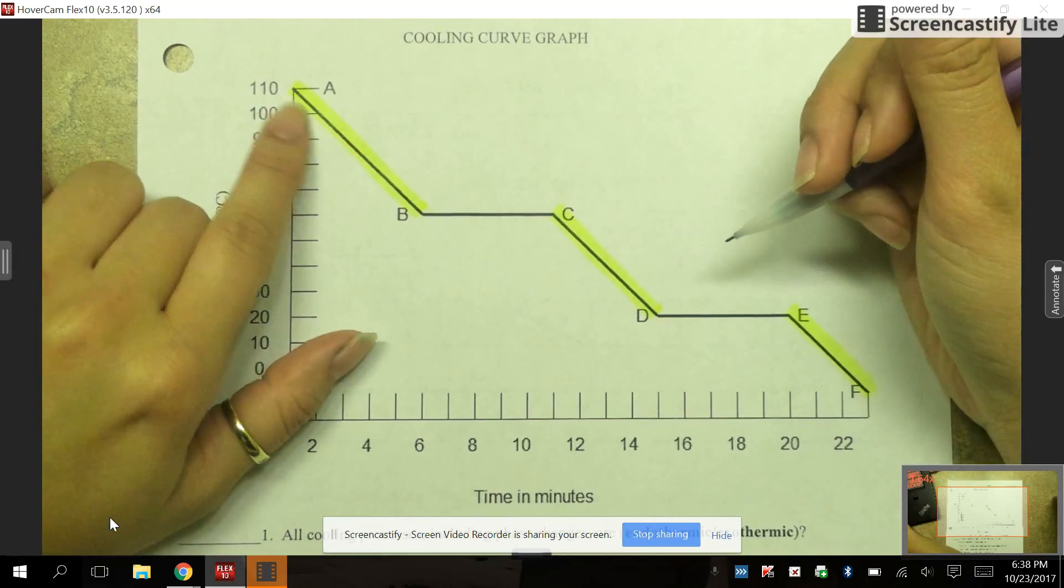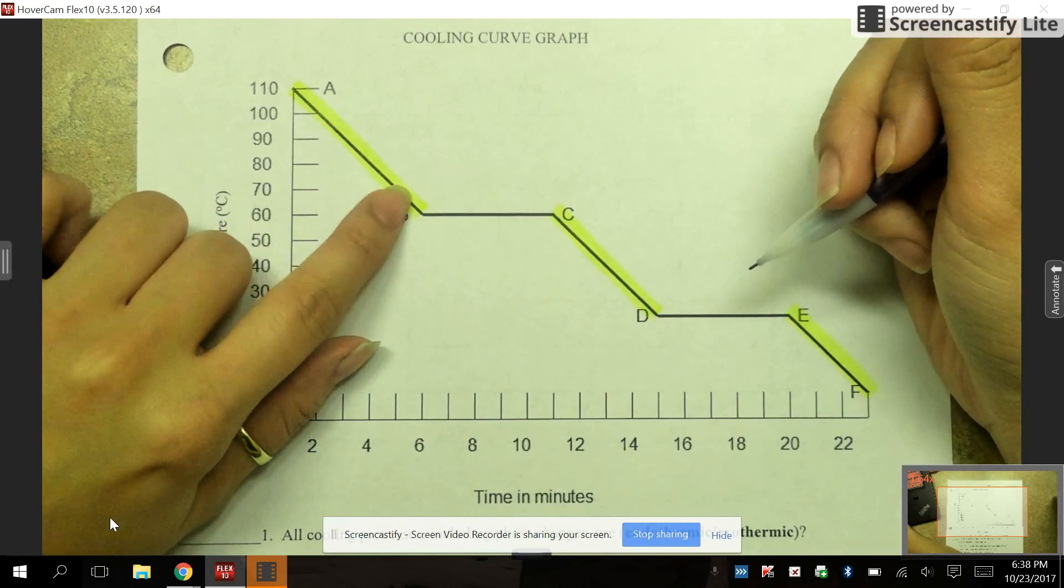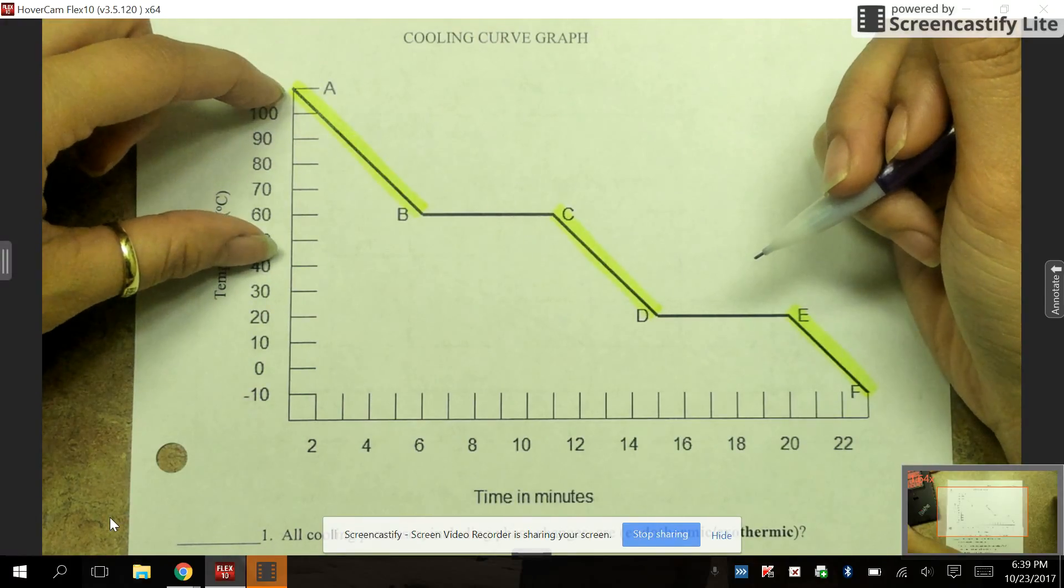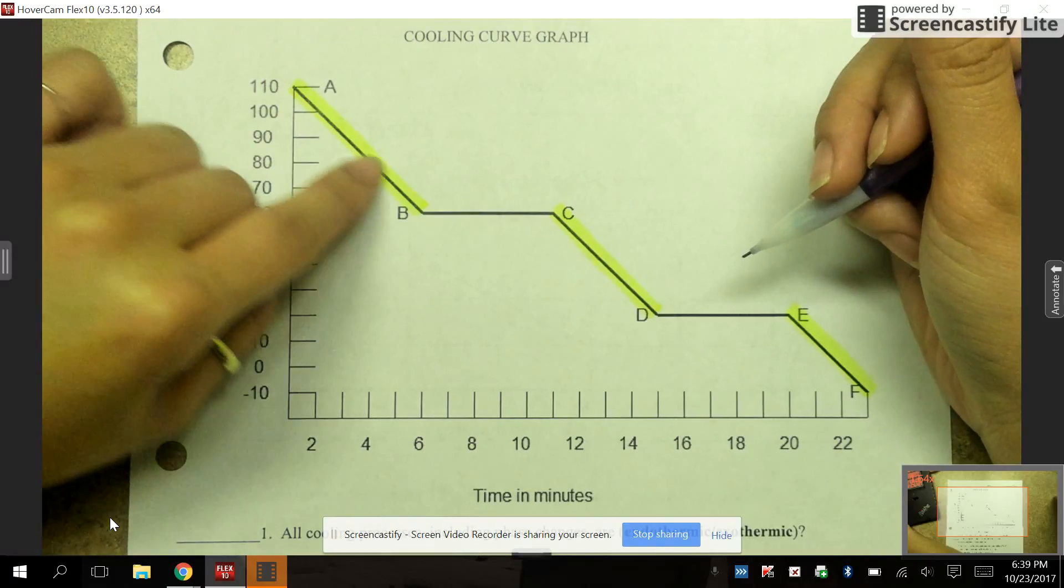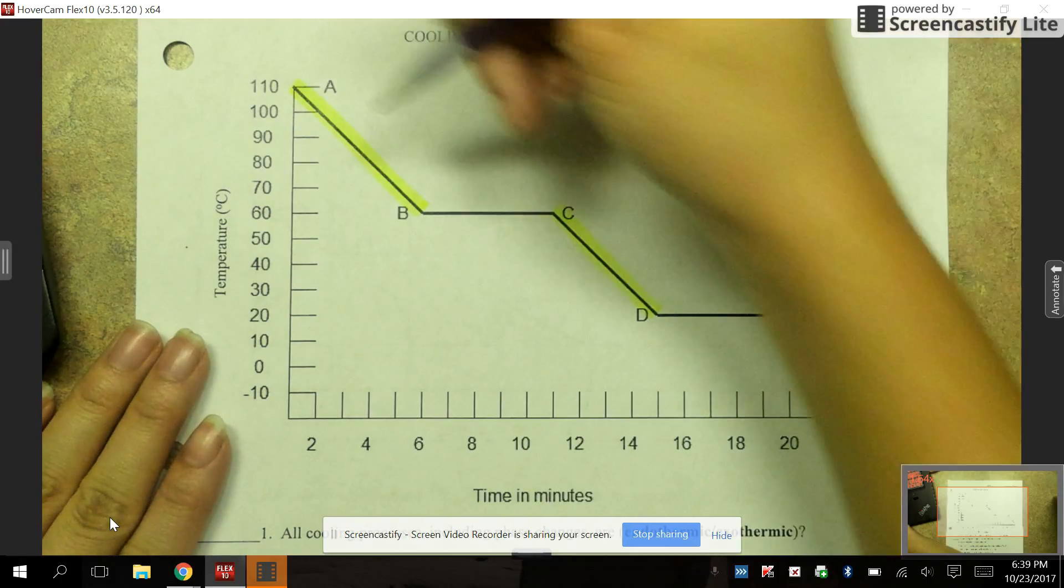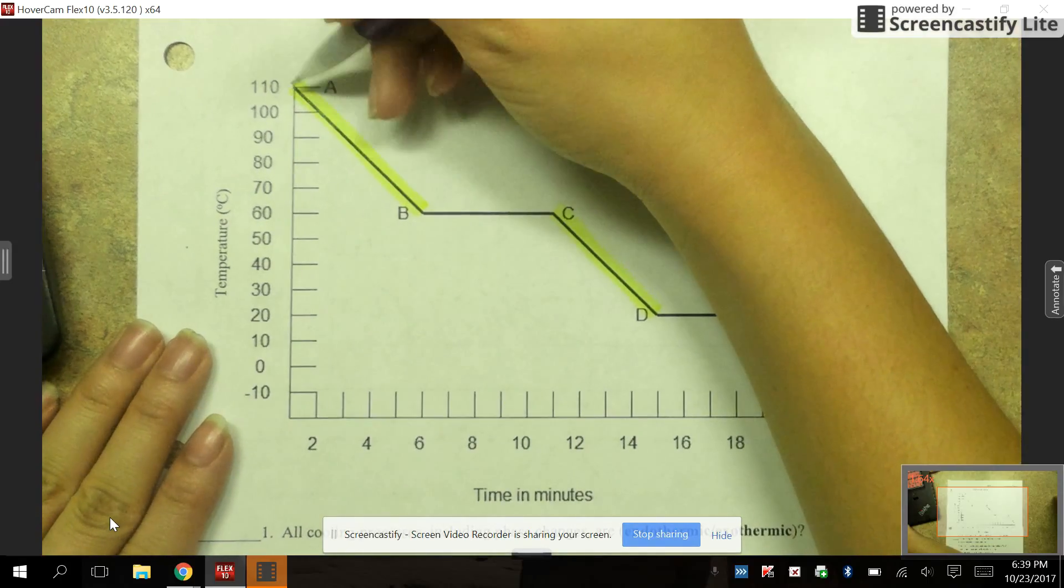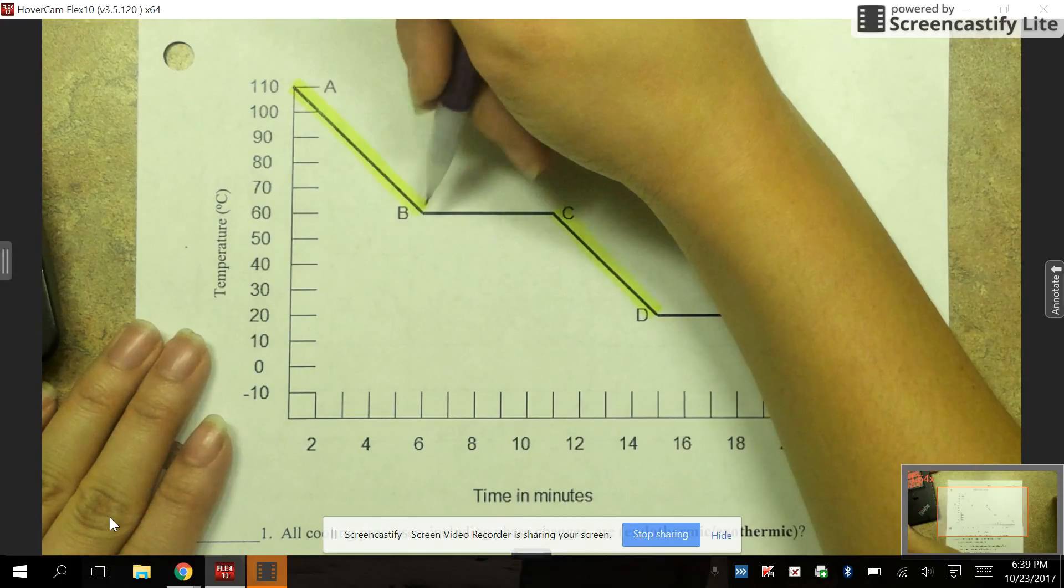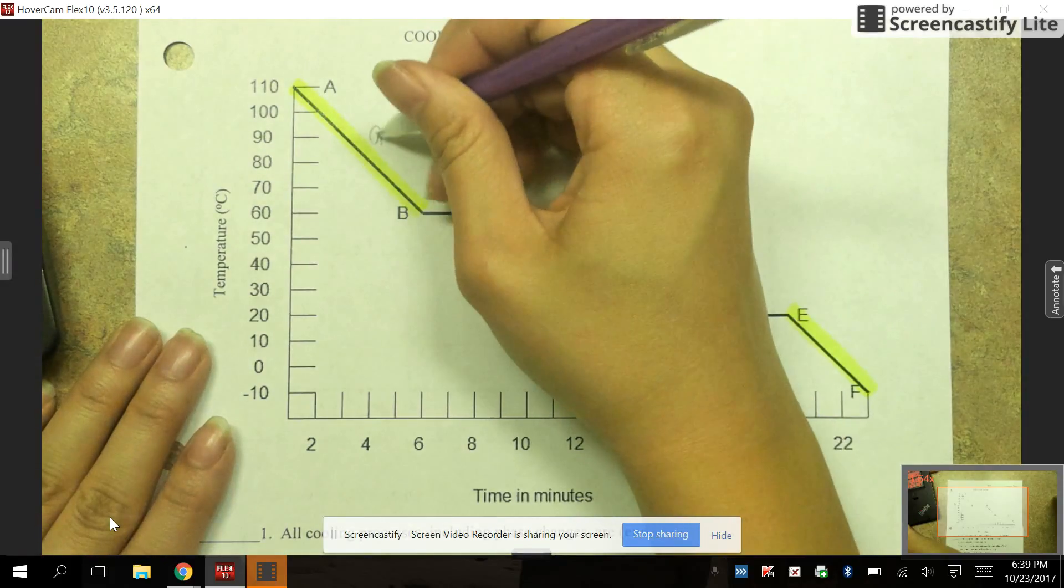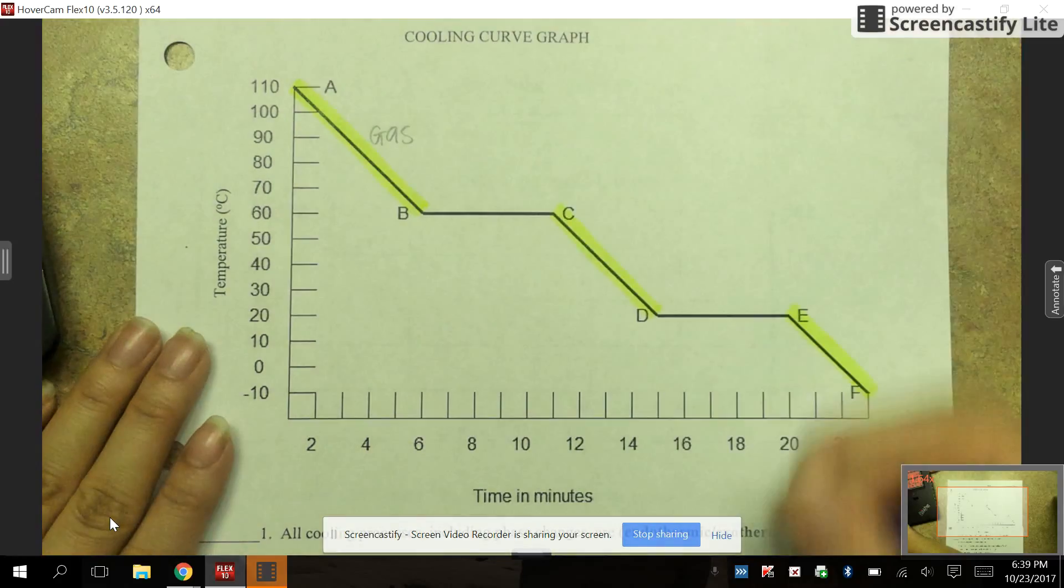If you look at this first slanted line right here we have to determine whether this is a solid, liquid, or gas. You're starting off at a very high temperature and you'll notice that as time progresses the temperature begins to drop. You have to remember that temperature is a measure of kinetic energy. So basically if this is a high temperature you should know that whatever state of matter this is has to be the state of matter that has the highest kinetic energy. And that is your gases. So go ahead and write gas right there.